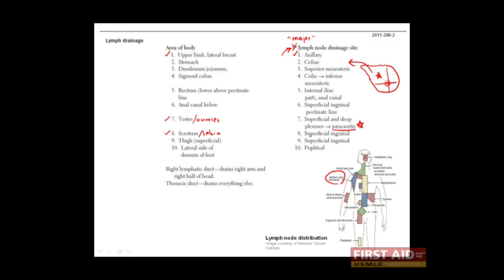Contrast this with the superficial inguinal nodes which drain the scrotum and the labia. Because the tissues which eventually form the scrotum and labia did not migrate during embryonic development, you'll tend to find their nodes very close by, namely in the superficial inguinal area, which you can see here.